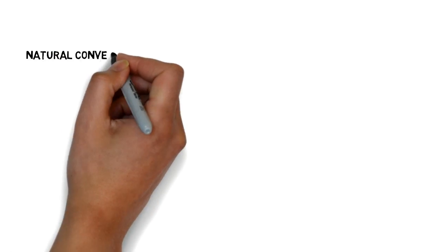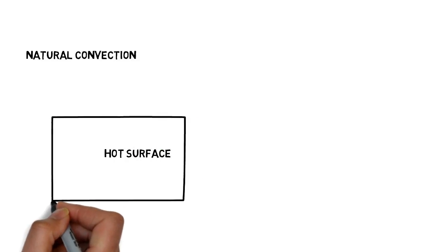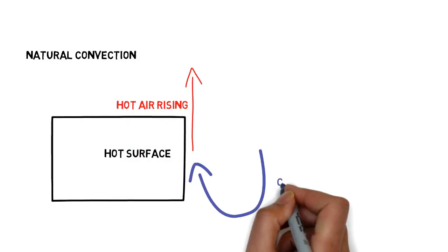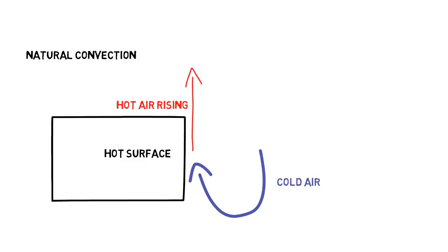In natural convection, the air current is created by buoyancy forces or in other words, as the air picks up heat, it rises and cold air takes its place and this makes a loop, an air current.